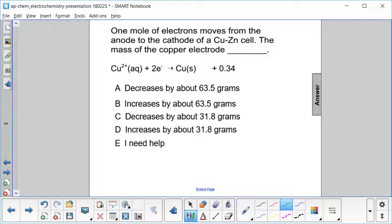So first of all, if we are moving from anode to cathode, the cathode is where the reduction takes place, and this is the reduction, and so we're going to expect the mass of the copper to increase. So it's either B or D.